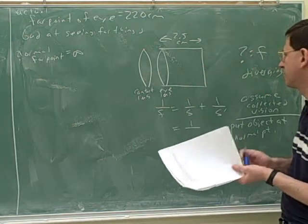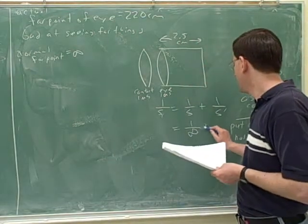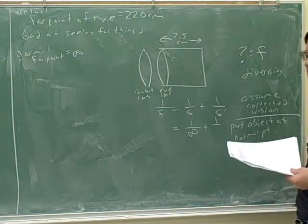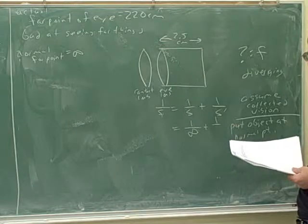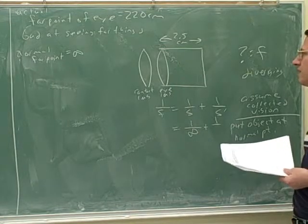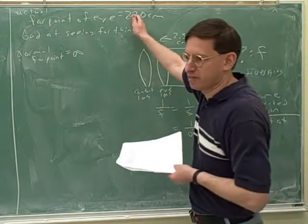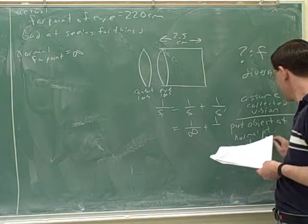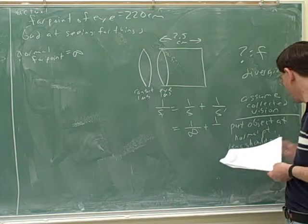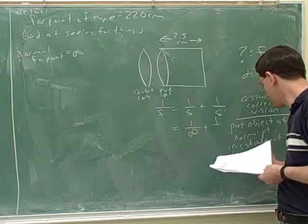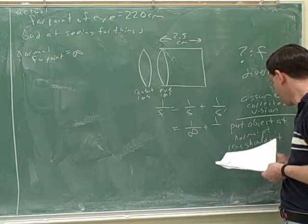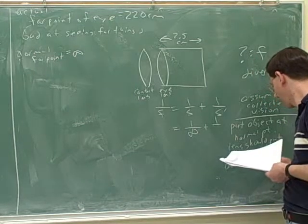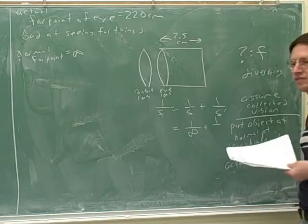So what am I plugging in for S? Infinity. And then what's the job of the lens to do? The job of the lens is to make it as though it's seeing something at 220 centimeters - is to put the image at the actual far point. So the lens should put its image at the actual far point of the defective eye.